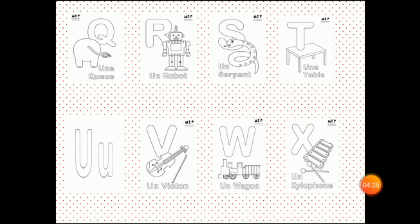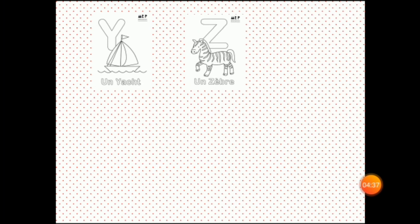V — Violon. W — Wagon. X — Xylophone. Y — Yacht. Z — Zèbre.